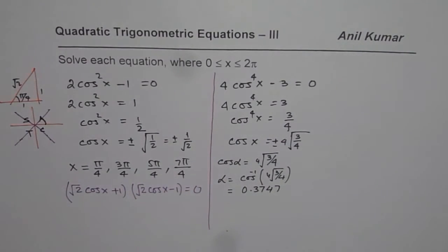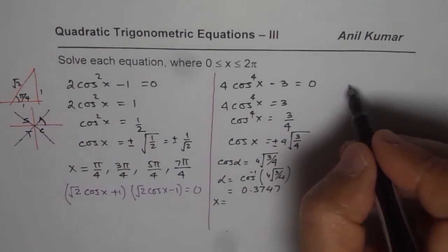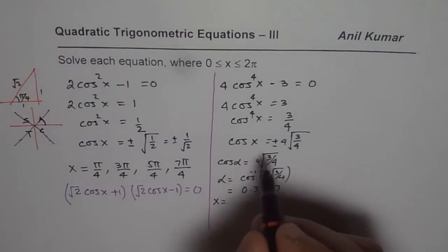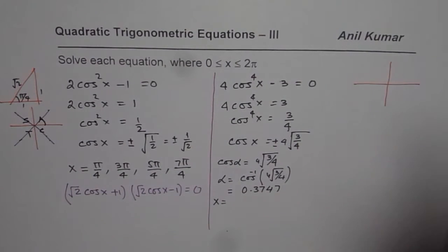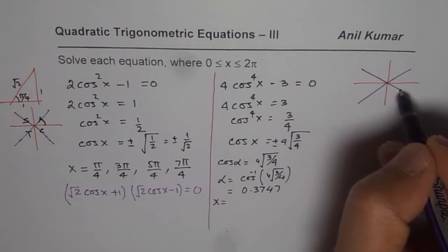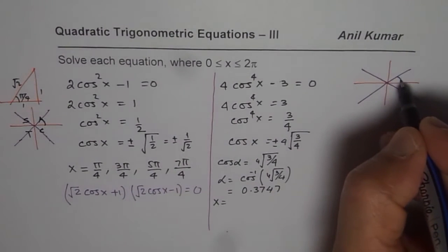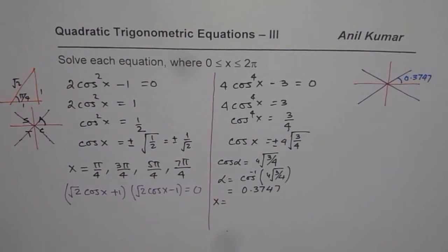Since we are looking now for 4 different solutions, our value for x equals, let me write down solutions here. Why do we have 4 solutions? Because we are looking for plus and minus. So we are looking for 4 solutions where the acute angle is given to us. Let me just draw. In this case what is known to us is the related acute angle which is 0.3747.